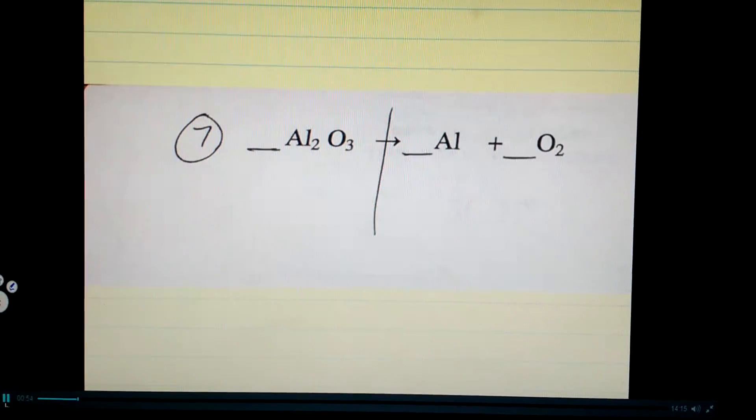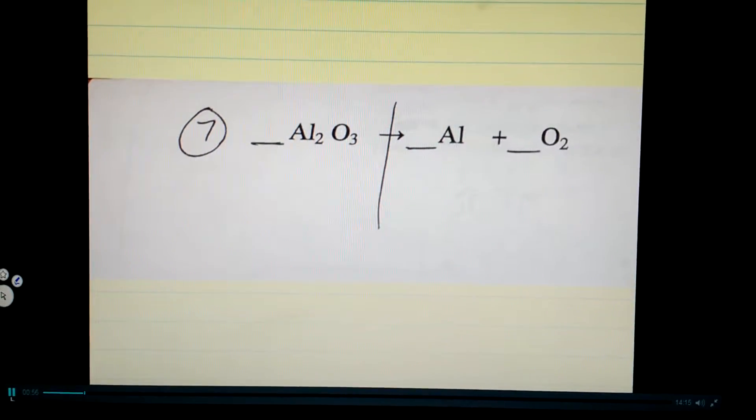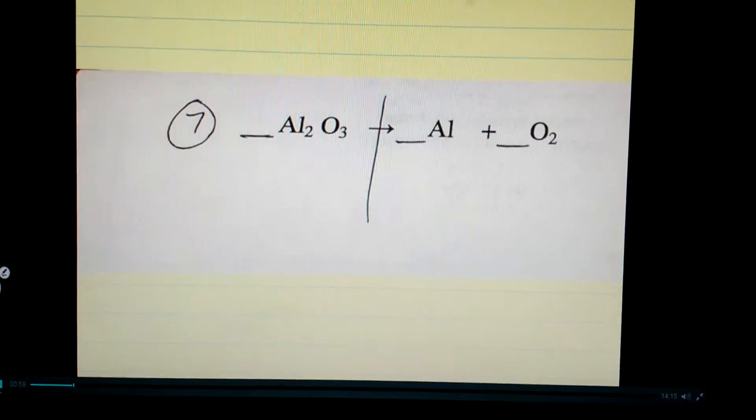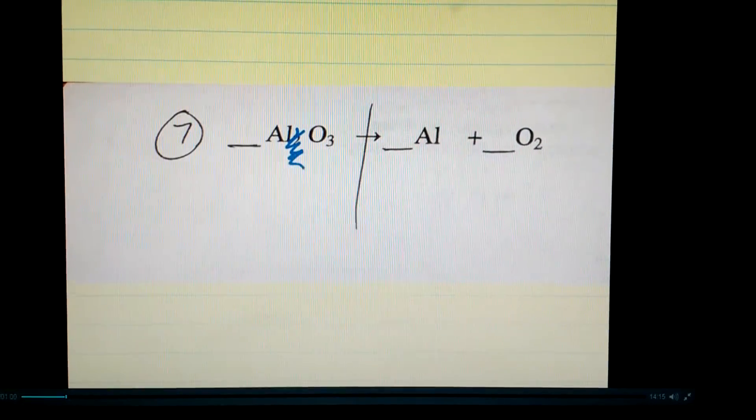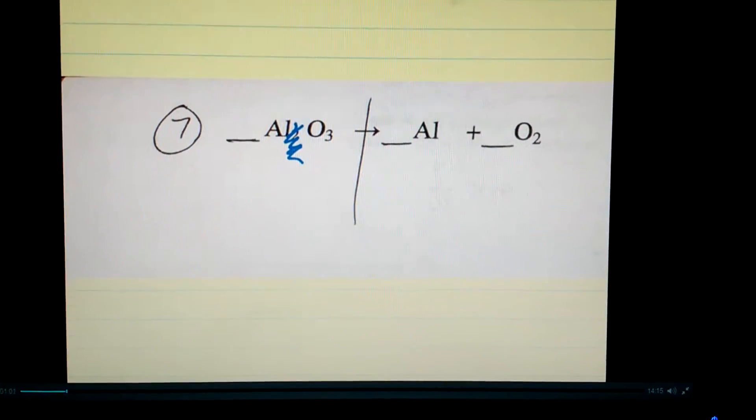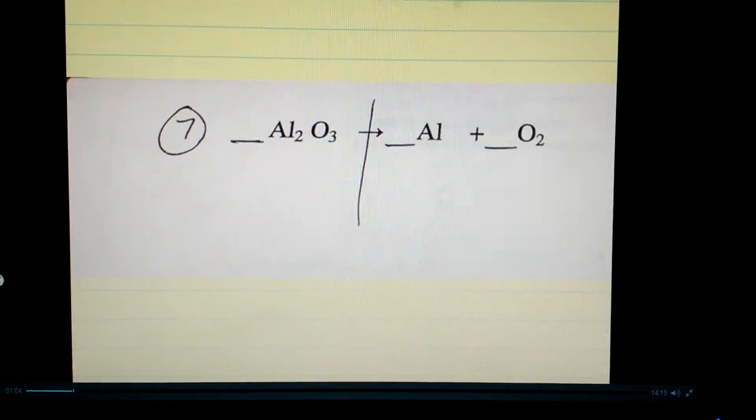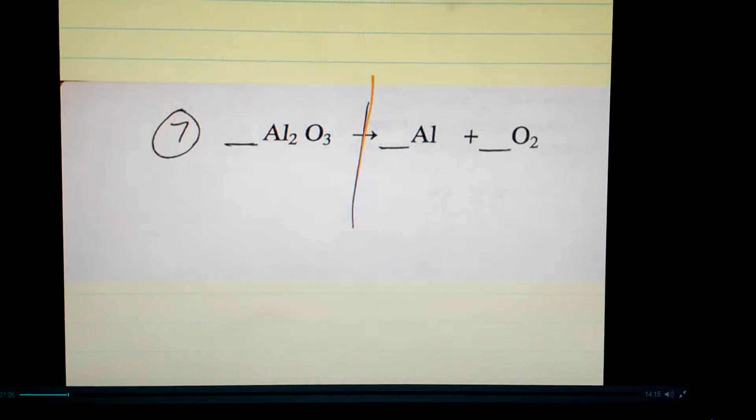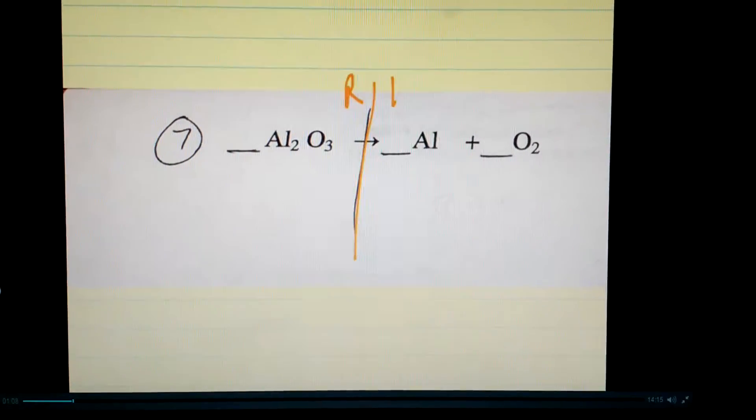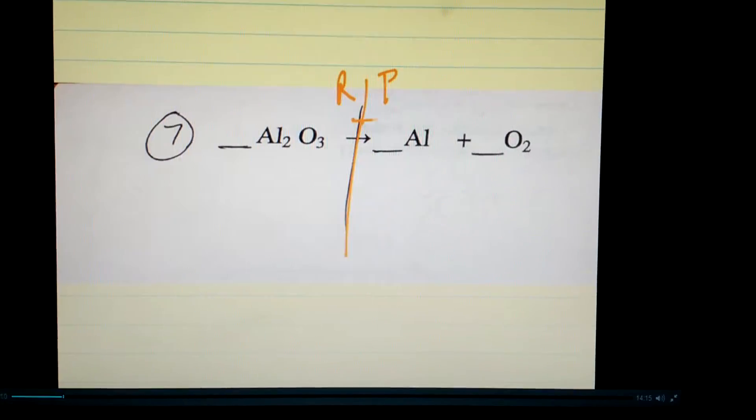The only thing that you can do when you balance an equation is make sure that you add more of something. You can't just scratch out something. That won't work. So you do have two sides. You have a reactant side and a product side. They do need to be equal.